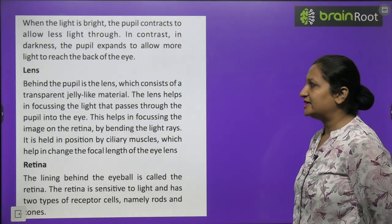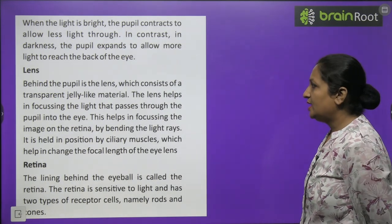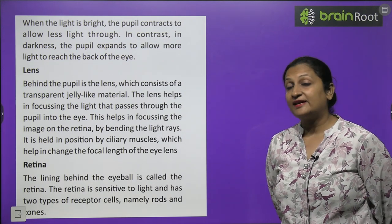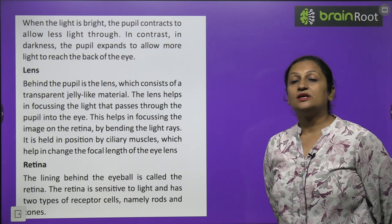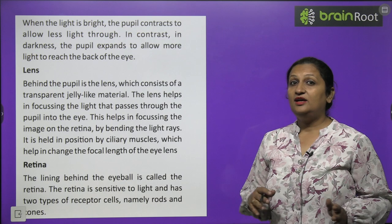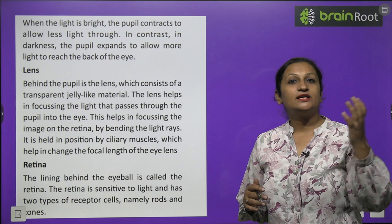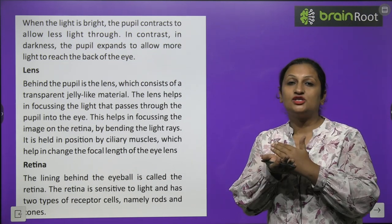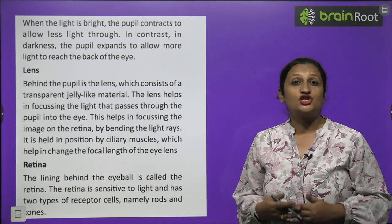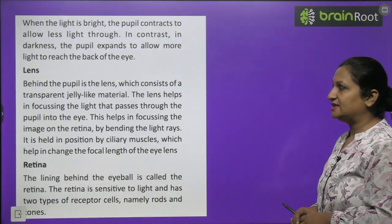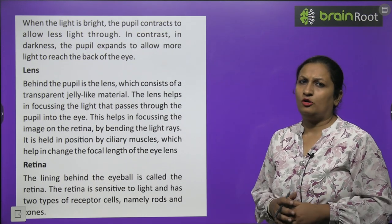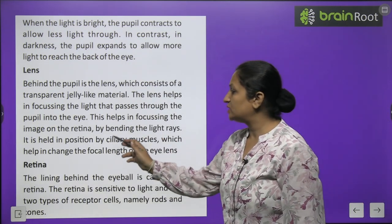Behind the pupil is the eye lens — transparent and jelly-like. This convex (converging) lens focuses the light passing through the pupil. It converges light rays at a point on the retina. Refraction occurs here because light travels from air through the lens material. The lens is held in position by ciliary muscles, which help change the focal length of the eye lens depending on how far the object is.